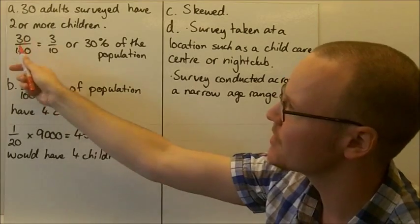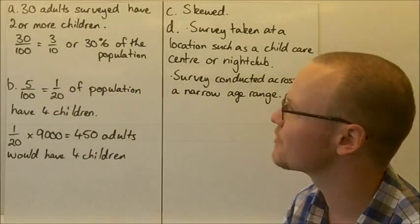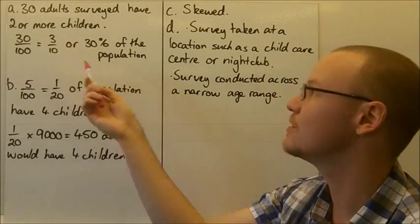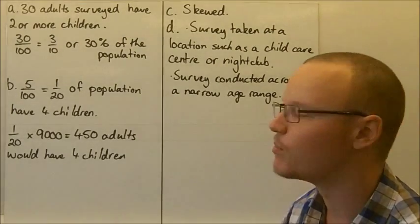So 30 out of 100, so that proportion is 3 tenths or 30%. So 30% of the population said, or you would expect 30% of the population to have two or more children.